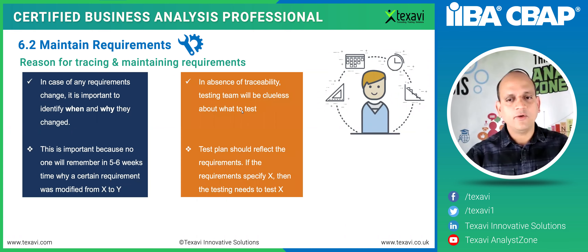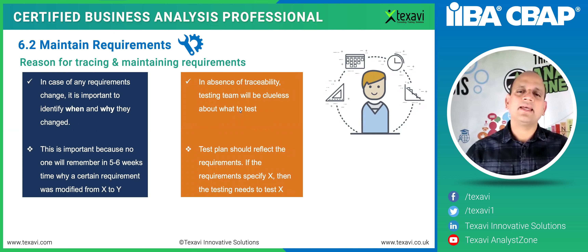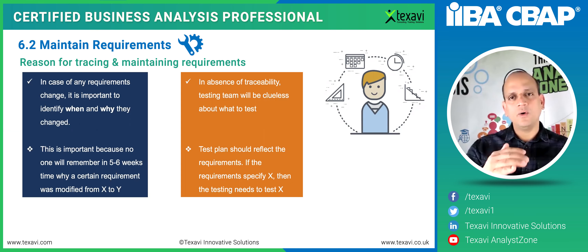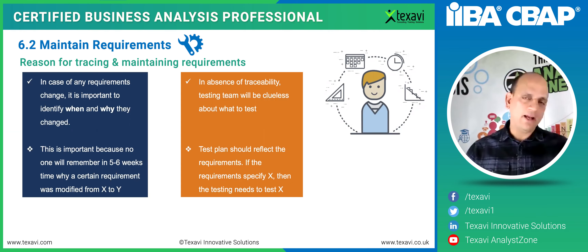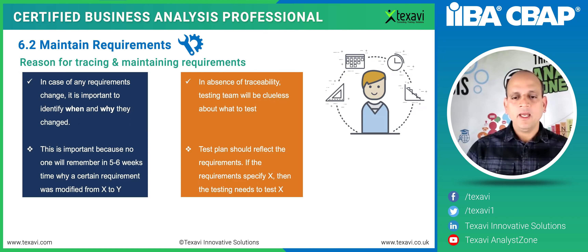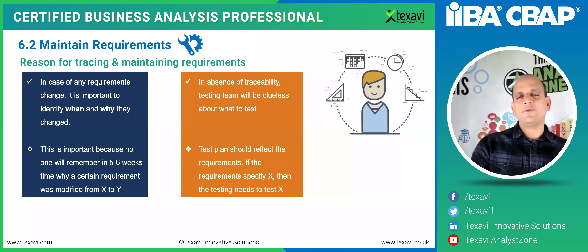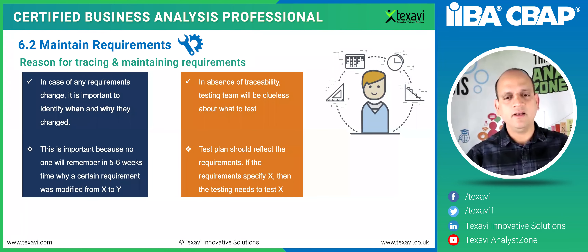If you don't have that traceability, the testing team will not be able to understand what to test. The development team will not understand where the code needs to be changed or which block of code was implemented to address a given requirement. There's no correlation anywhere, and testing won't be done properly, resulting in a lot of problems and defects.